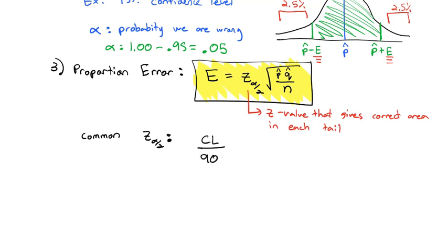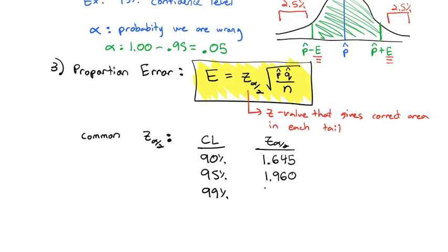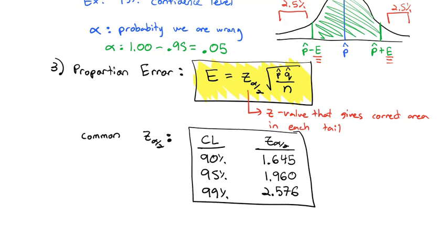Most confidence intervals come in one of three types: 90%, 95%, or 99% confidence levels. For 90% confidence — 5% in each tail — we use z sub alpha over 2 equal to 1.645. For 95% confidence, we use 1.960. For 99% confidence, z sub alpha over 2 is 2.576. You don't need to memorize these, but you should have them handy for your assignments, practices, and labs.